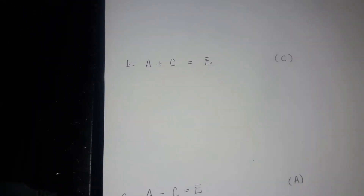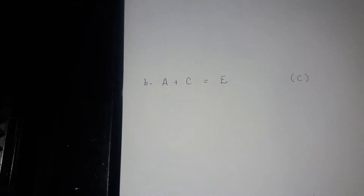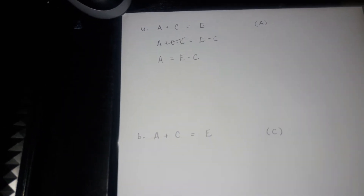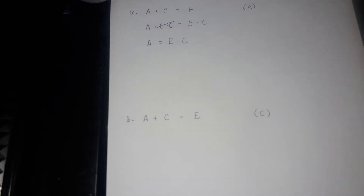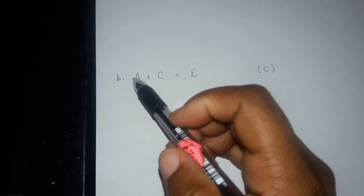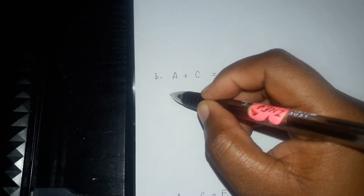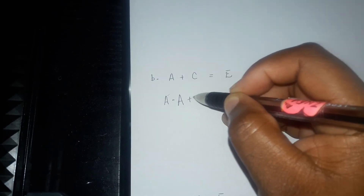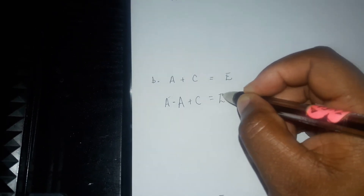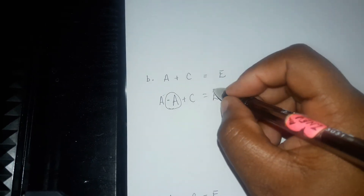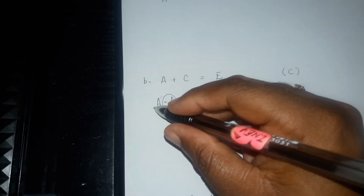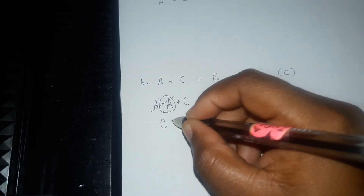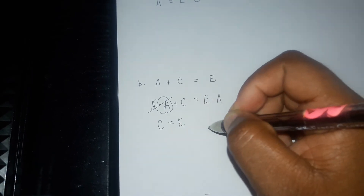Moving on to part b. You have the same equation a plus c equals to e, but now you want to solve for c. Previously you solved for a — now you're solving for c. A is positive, so since it's positive, you do the opposite: you minus a. So you write minus a plus a plus c equals to e, and you put minus a on the right side too. This cancels out and you are left with c equal to e minus a.